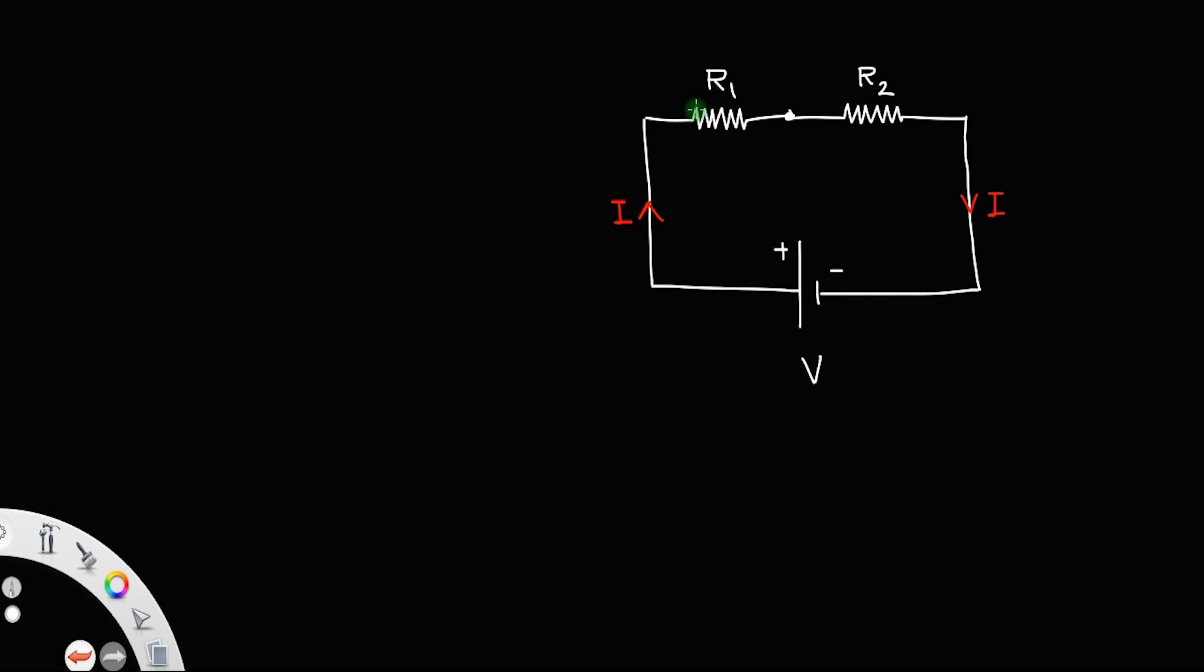Since the connection is series, the same current flows through R1 and R2.